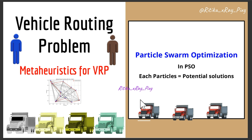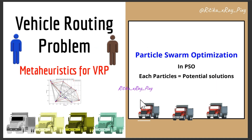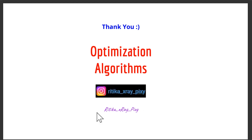Meta-heuristic algorithms are used for VRP because they provide near-optimal solutions quickly even when the problem is complex and large. They can solve large-scale problems with many customers and vehicles, and they adapt to different constraints and objectives like minimizing cost and balancing workload. In the next video, we will apply a meta-heuristic algorithm to solve the Vehicle Routing Problem. If you have any questions, comment below — thanks for watching.